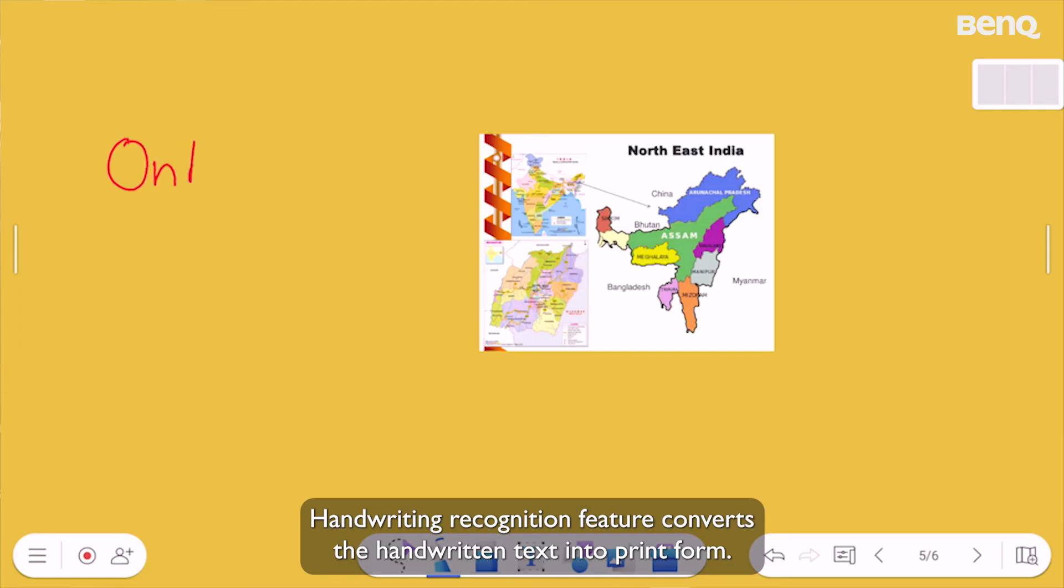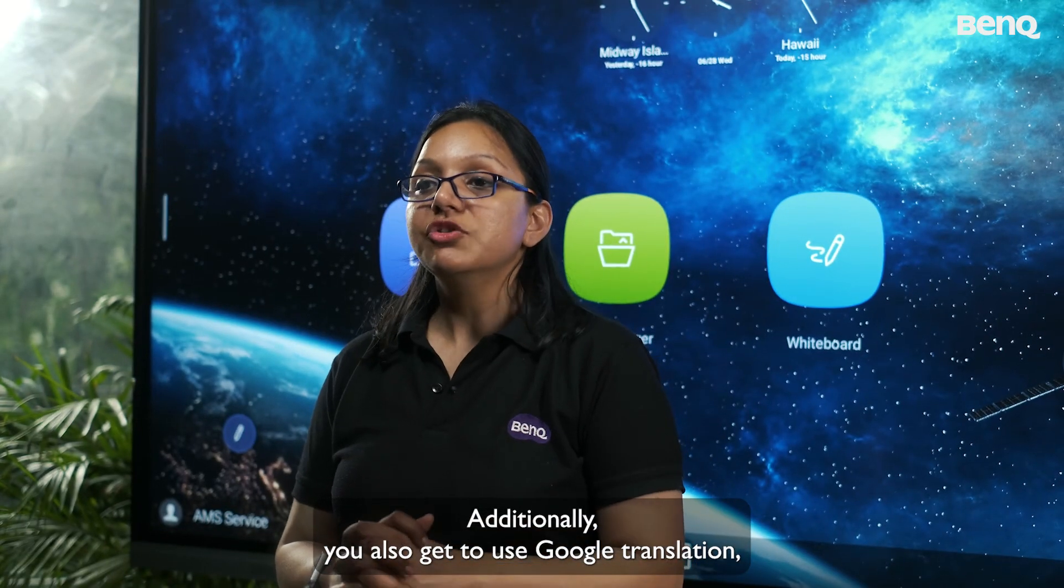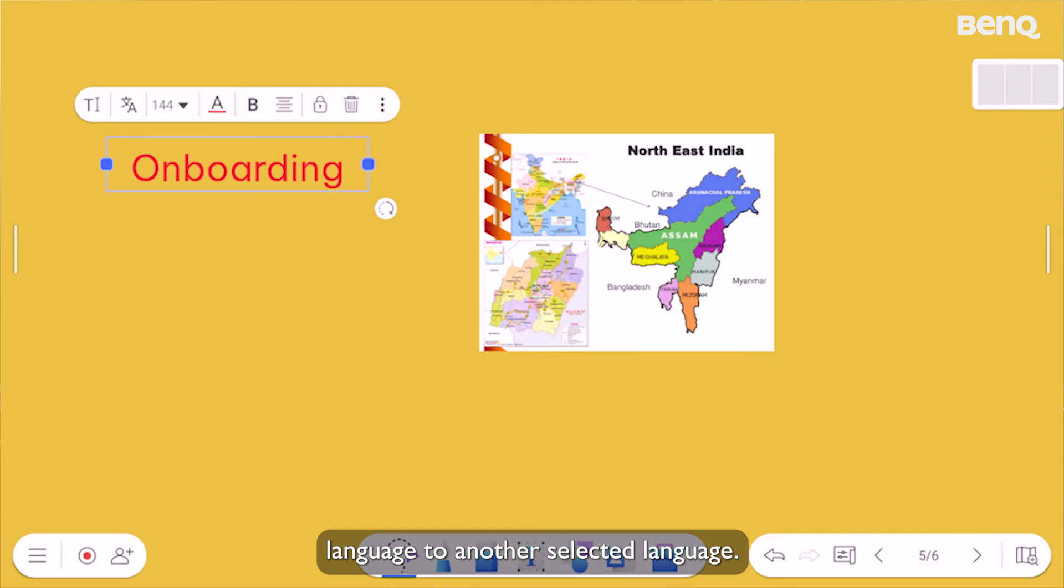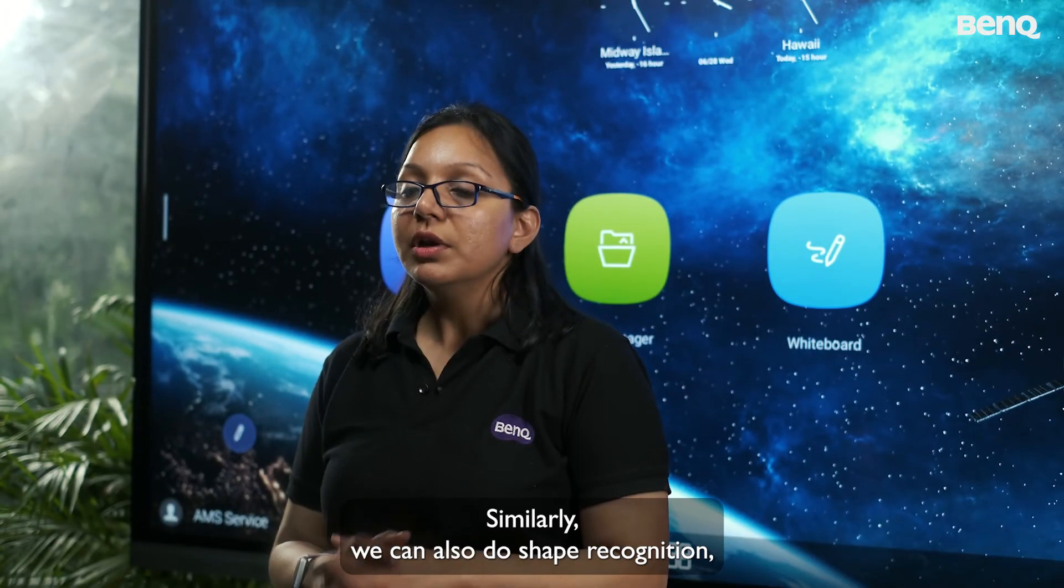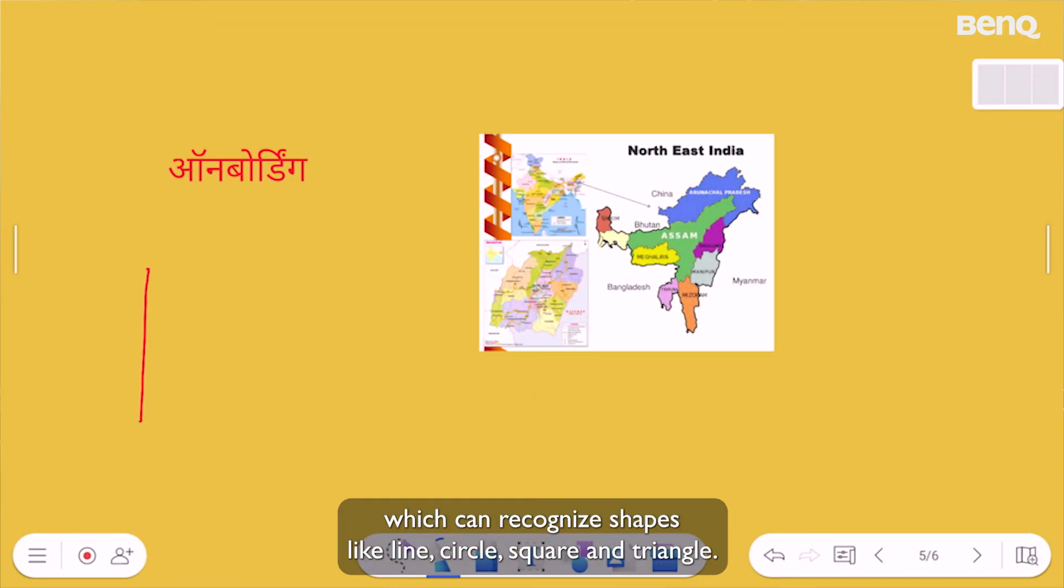Additionally, you also get to use Google Translation, which can translate text from any one language to another selected language. Similarly, we can also do shape recognition, which can recognize shapes like line, circle, square and triangle.